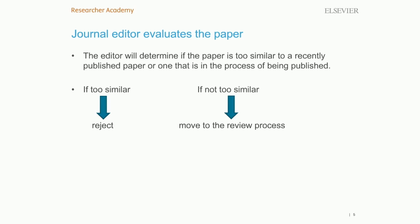If the editor deems that the topic is too similar to one that has already been recently published or one that is in the process of being published, the editor may make the decision to reject the paper. If the editor decides that the topic has something new to offer and is not too similar to what has already been published, the paper will move to the peer review process stage.